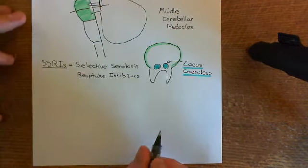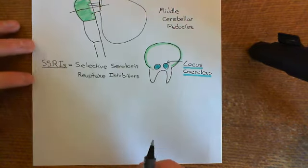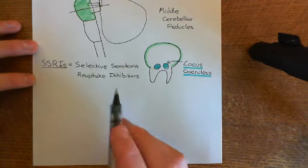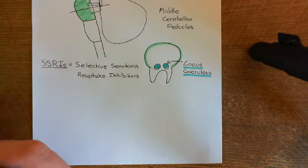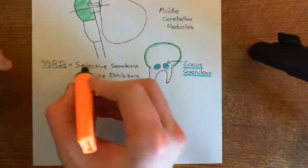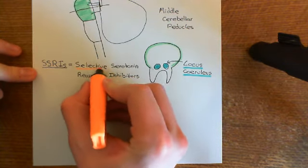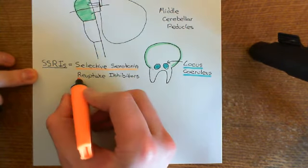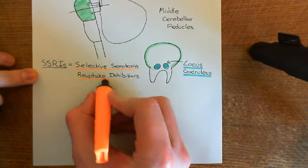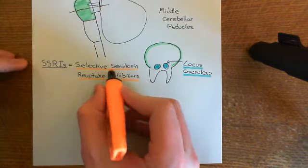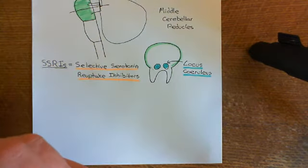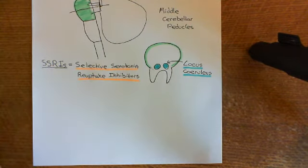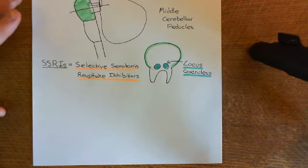Let me give you examples of these drugs and then describe what they actually do. What they actually do is told within the name - they're going to inhibit the reuptake of serotonin, and they're going to be selective for stopping the reuptake of serotonin, so they're not going to also stop the reuptake of some of the other monoamines.